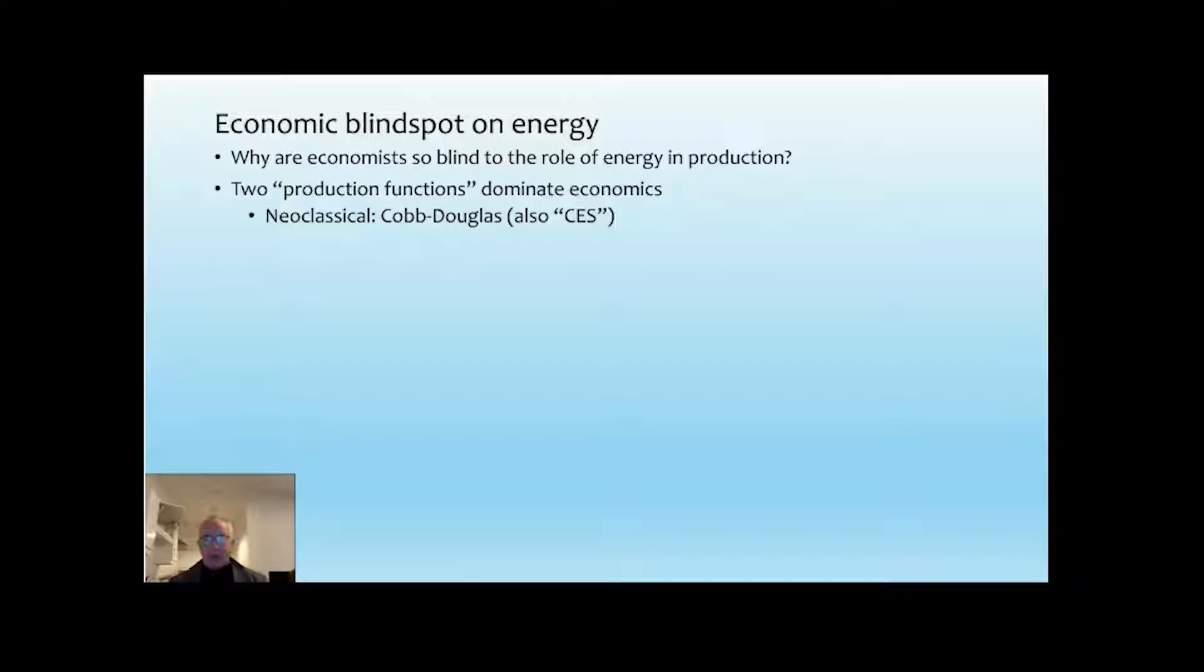The neoclassicals use the Cobb-Douglas production function. They also talk about another one called the constant elasticity of substitution. Most of the time though they'll default to using Cobb-Douglas, and that shows output as a function of technology times labor and capital, and there's no role for energy in those three, unless you subsume energy in technology and they haven't consciously done that.